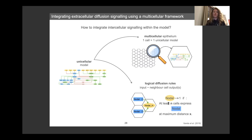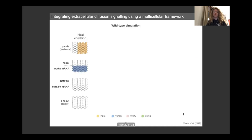So for example, in this example, the nodal input will take the value 1 if at least n cells express nodal as an output of the model at the maximum distance of x cells. So by building diffusion rules, we can then simulate the embryo into a single epithelium, as I mentioned. And here is the simulation of wild-type condition.